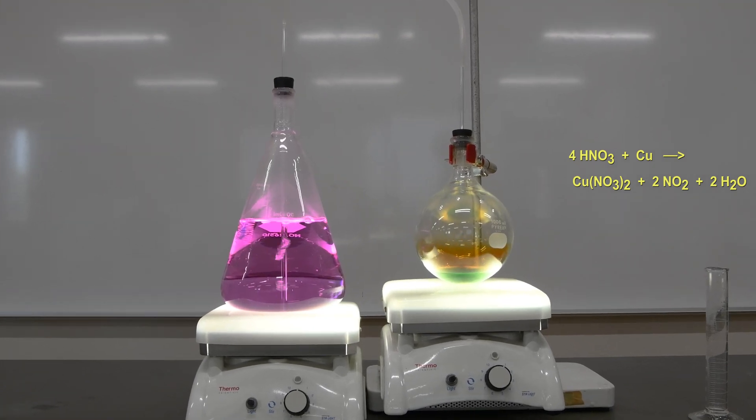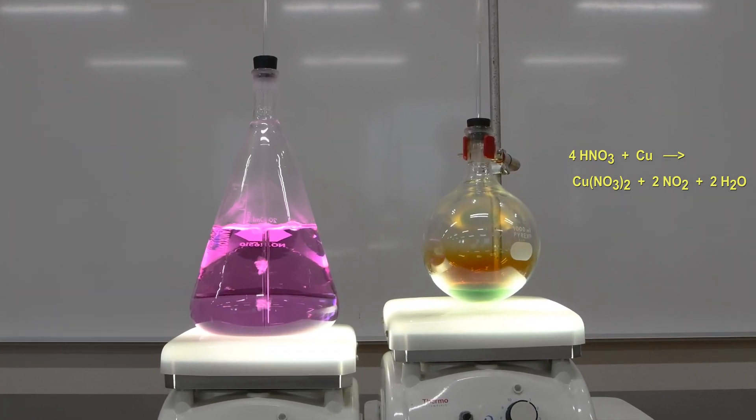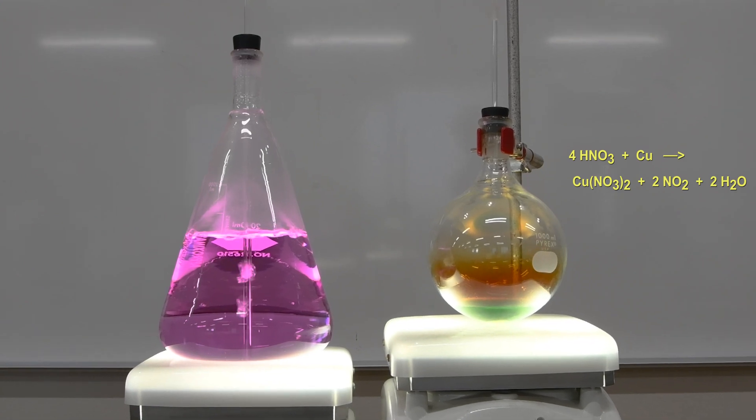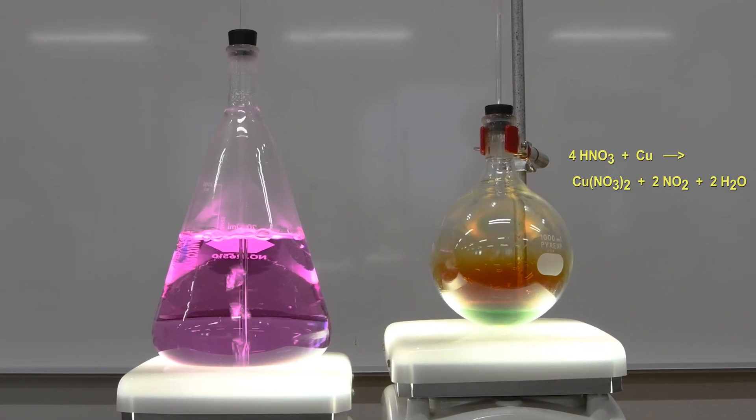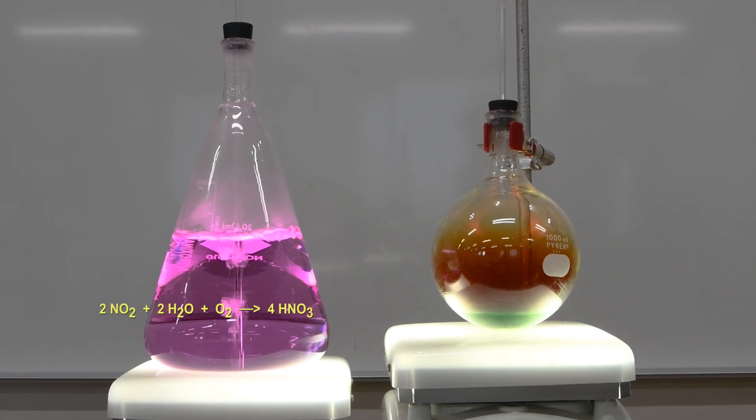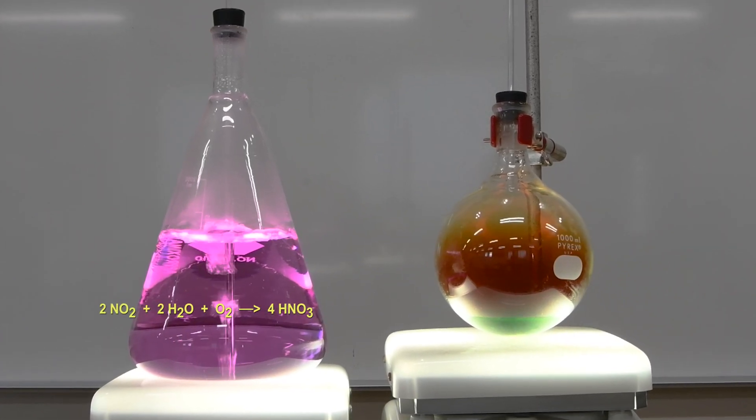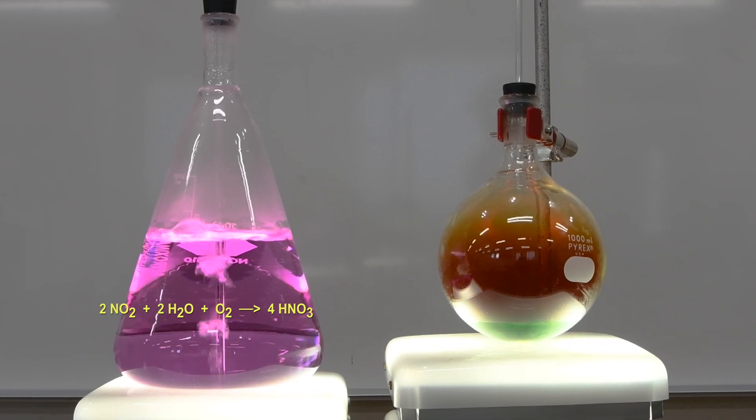You can see that the nitrogen dioxide is beginning to bubble over into our flask. Now the flask, the large flask is pink right now because it's basic, but nitrogen dioxide, when it dissolves in water, forms nitric acid once again, and it's going to slowly turn that solution acidic.